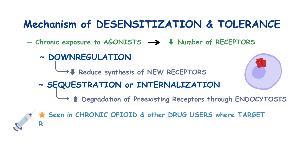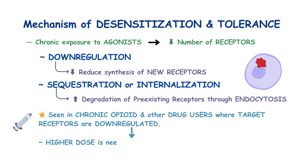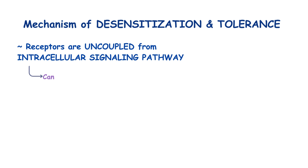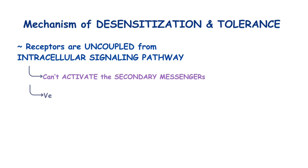This phenomenon can be seen in chronic opioid and other drug users, where the target receptors are down-regulated, so a higher dose is needed to achieve the same effect. Alternatively, the receptors may be modified so they are uncoupled from their intracellular signaling pathway, meaning they can't activate the secondary messenger proteins anymore. This type of response is very rapid and mainly causes desensitization.